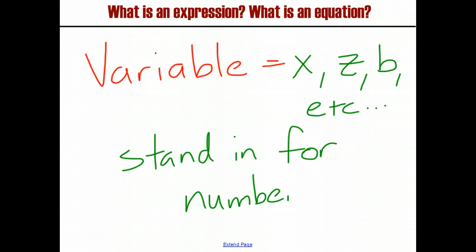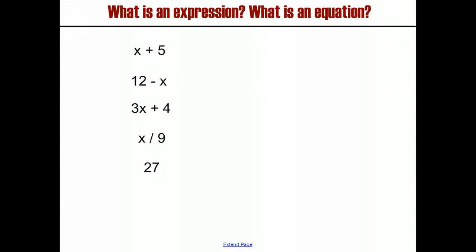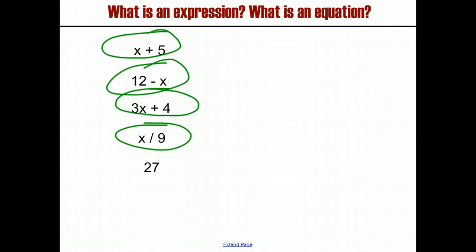And you'll see what I mean here when I give you a few examples of expressions. Expressions are things like X plus 5, 12 minus X, 3X plus 4, X divided by 9, and 27. The first four of these all involve variables X. That X represents some unknown number. We're not sure what it is now. It could be any number. It could be a specific number, but it represents a number. And then 27, of course, has no variable.